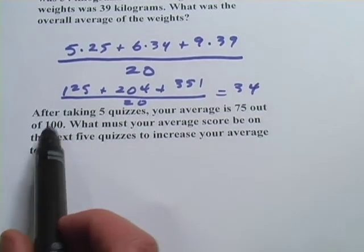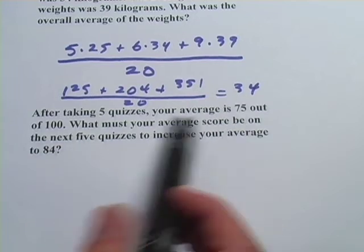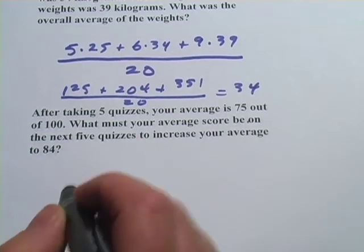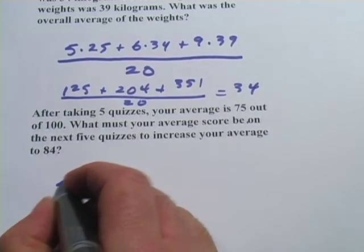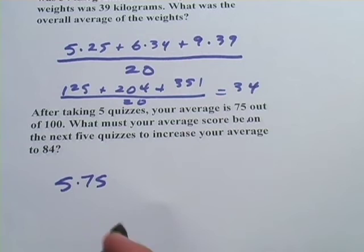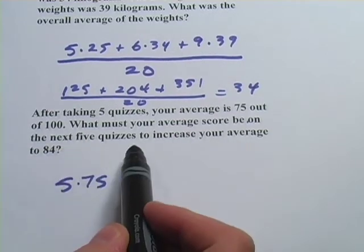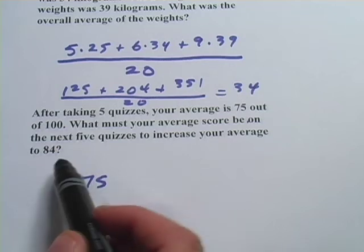This one says, after taking five quizzes, your average is 75 out of 100. So on those first five quizzes, you averaged 75. So we're going to say that's five quizzes that you all scored 75 on. What must your average score be on the next five quizzes to increase your average to 84?